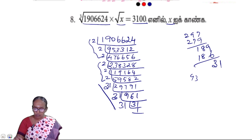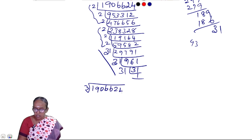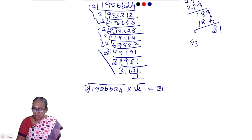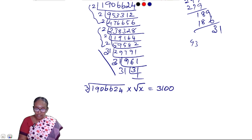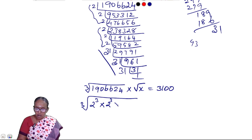Let's go to the cube root of 1906624 into root x is equal to 3.3. What is the cube root of 1906624 into root x is equal to 3.3?